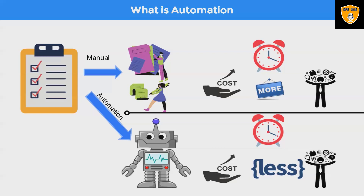Enterprises had begun to integrate automation into their processes since the time of the industrial revolution. The arrival of the pandemic accelerated the transformation — automation became an utmost priority, and not just that, a broader and more agile execution became a requirement.